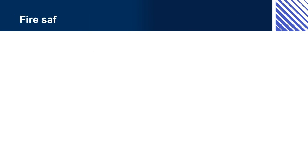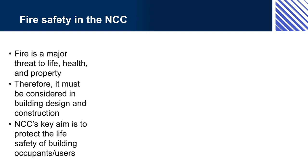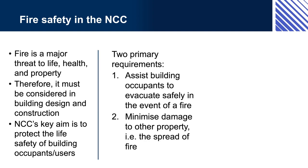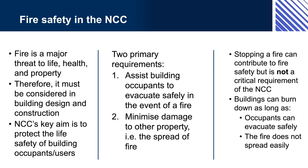Fire safety in the NCC predominantly focuses on the safe evacuation of occupants before exposure to untenable conditions, and preventing damage to other buildings — i.e., minimising the spread of fire from one building to another. Untenable conditions are conditions in which human life is not sustainable due to prolonged exposure to smoke, heat, or toxic gas. For instance, stopping the combustion process can contribute to fire safety in buildings, however it is not a critical requirement of the NCC.